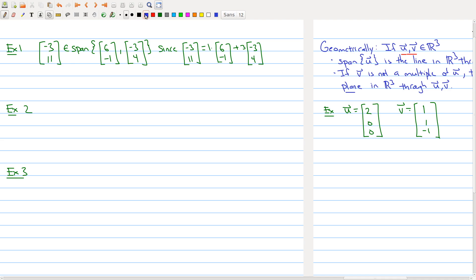The next example shows us that no span is ever going to be empty. For any collection of vectors v1 through vp in Rn, we have that the zero vector always belongs to v1 through vp.